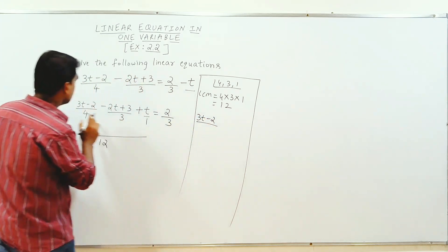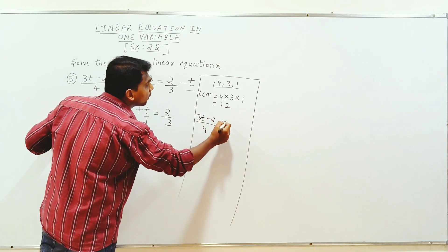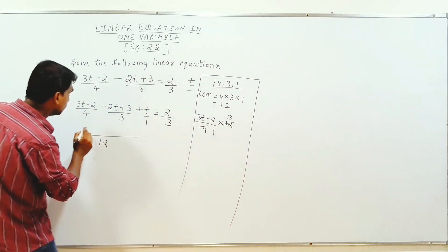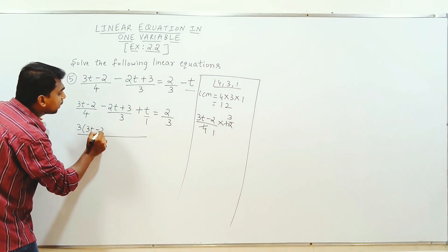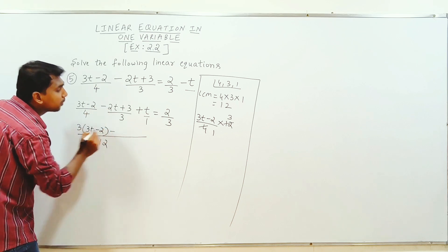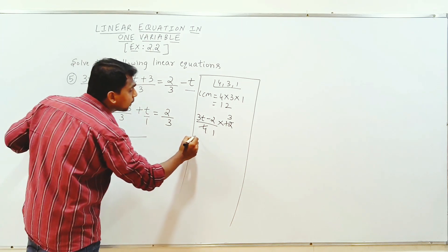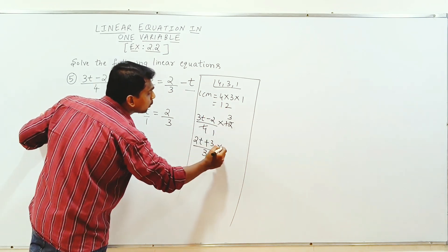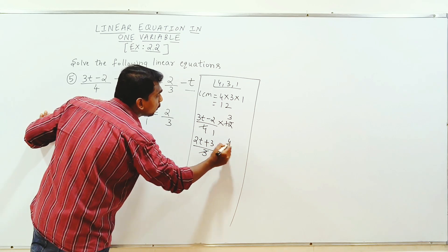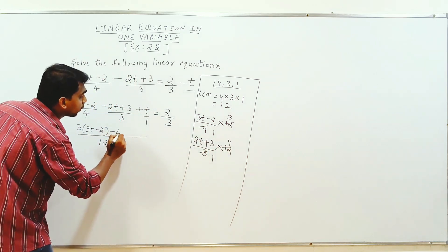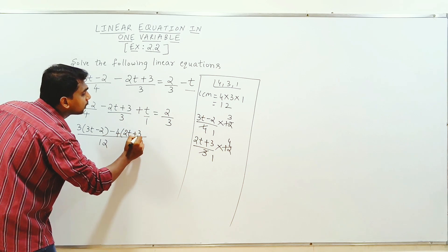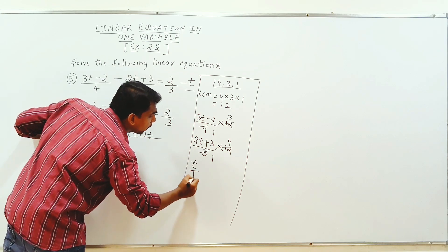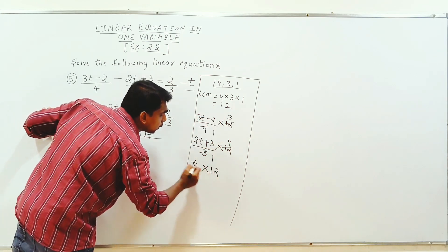Next, the first number 3t minus 2 divided by 4. In LCM multiply 1 so 4, 4, 3, 3 into it. Then multiply 1 so 3 into 3t minus 2. Minus, it is minus 2. Second number 2t plus 3 divided by 3. LCM is 12. 3, 1, 4, 4 into 4 into 2t plus 3.